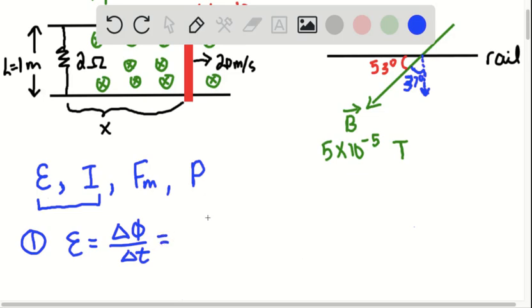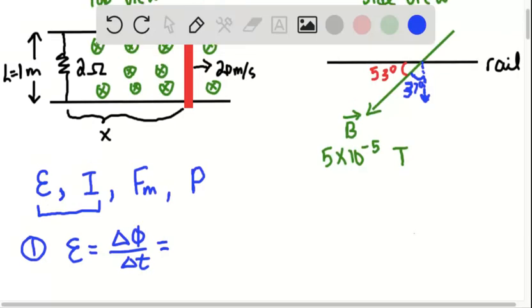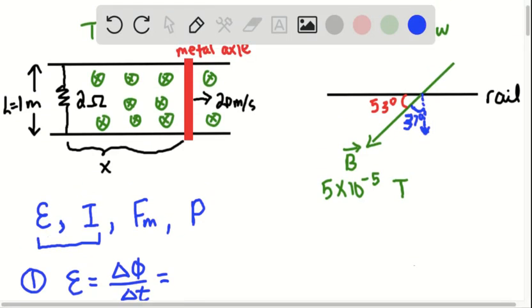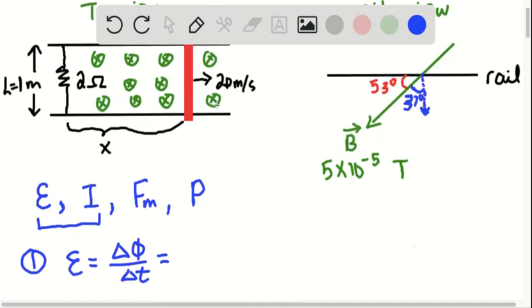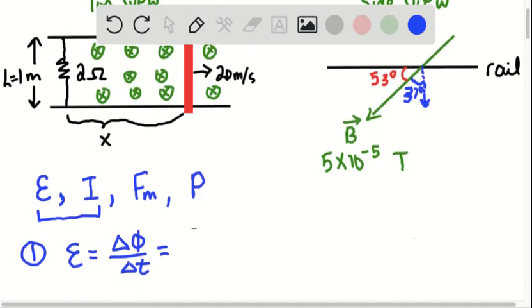Let's now look into this change in magnetic flux. What is really changing is the area that is enclosed by this closed loop, right? As you move the metal axle to the right, you're enlarging the area. So when we write BA cosine of theta, we're really looking at B delta A because the area is the one that is changing times cosine of 37.